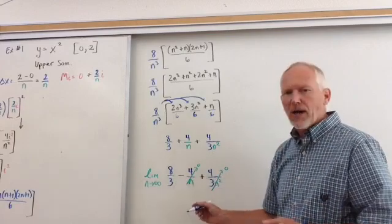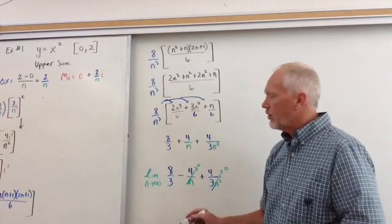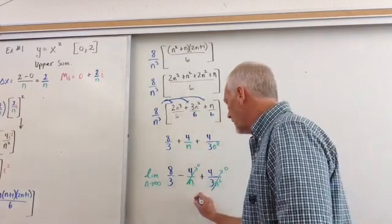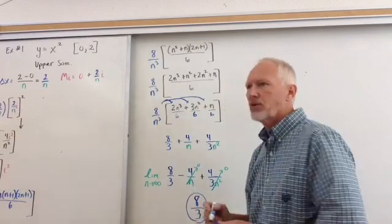So then our true estimation with the limit definition of this function is 8 thirds. 8 thirds is our total sum.